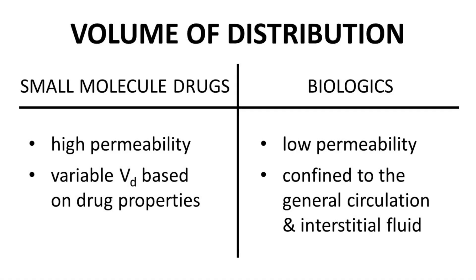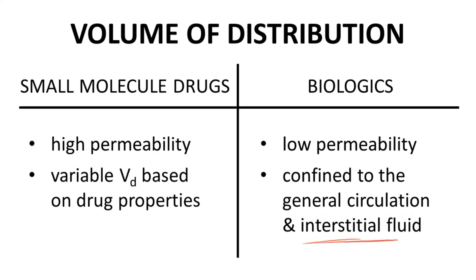The volume of distribution of small molecule drugs varies considerably. Depending on the structure of the drug, volume of distribution may be relatively high or relatively low. Biologics, however, because of their poor permeability, are typically confined to the general circulation and the interstitial fluid that bathes the cells. Therefore, biologics tend to have quite low volume of distribution.